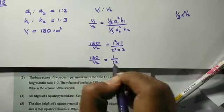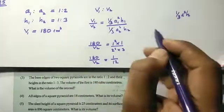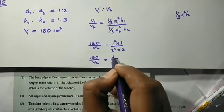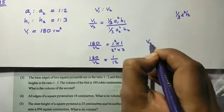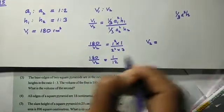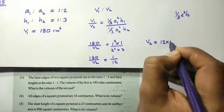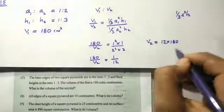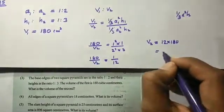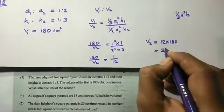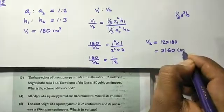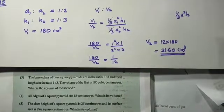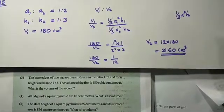This is a cross-multiplication. We do V2. That is 180. So 1 times V2 equals 12 times 180. Therefore V2 equals 12 times 180, which gives V2 equal to 2160 cubic centimeters.